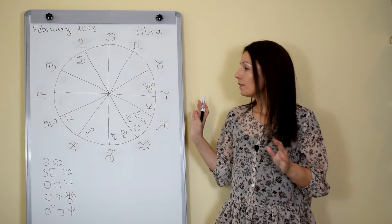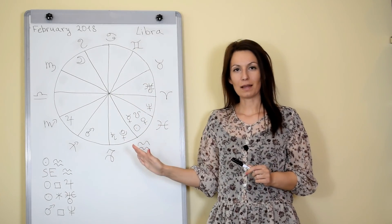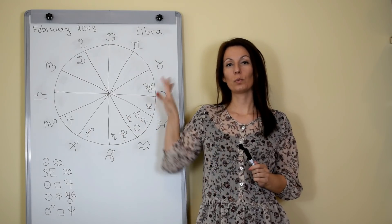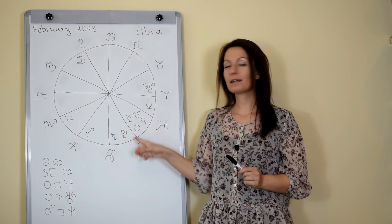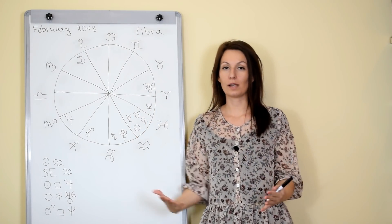So I think that these are the most important aspects during this month. Don't forget the solar eclipse on the 15th of February will be the most important event. It's about your personal life, romantic life, children, creativity and all kinds of personal desires.